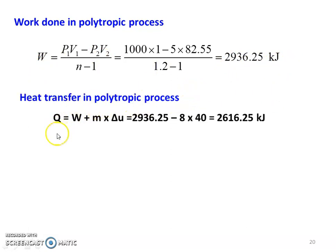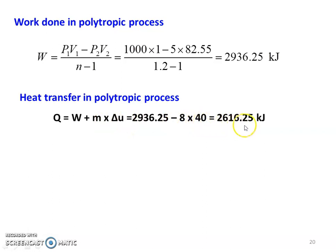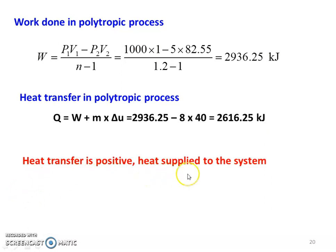Heat transfer in the polytropic process: Q equal to W plus delta U. The total change in internal energy is mass into specific delta U, equal to 8 into minus 40, which is minus 320 kilojoules. So Q equal to 2936.25 plus (minus 320) equal to 2616.25 kilojoules. The heat transfer is positive — heat is applied to the system and work transfer is also positive.